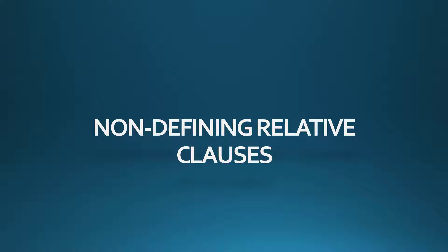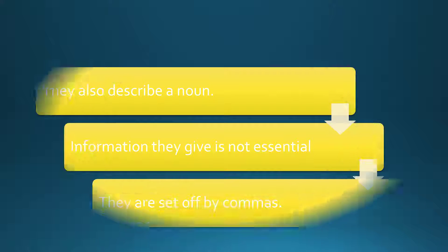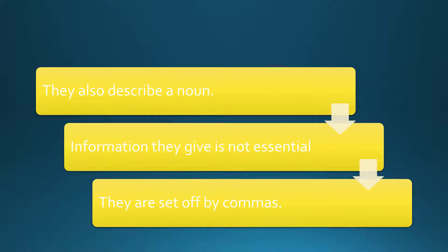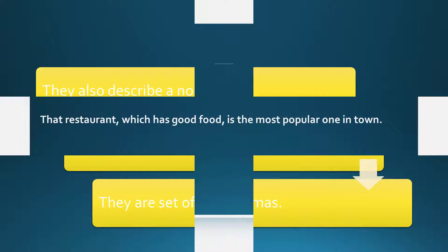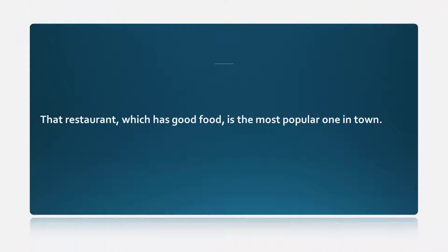Non-defining relative clauses also describe a noun, but the information they give is not essential. They are set off by commas. For example: that restaurant, which has good food, is the most popular one in town.